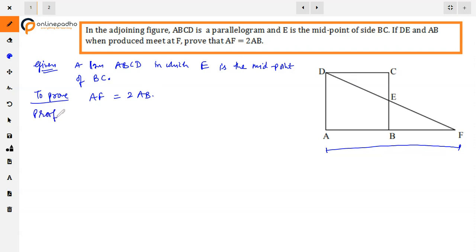First, we need to look at the two triangles formed here: triangle DCE and triangle FBE. We will prove these triangles are congruent. In triangle DCE and triangle FBE: